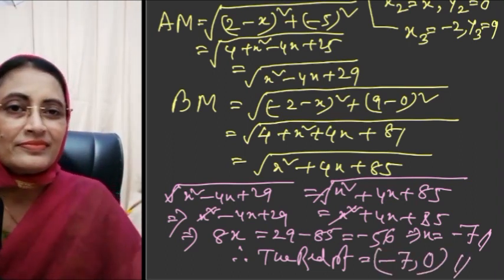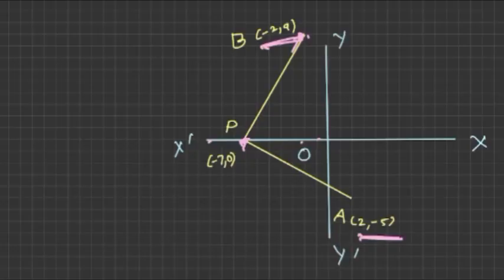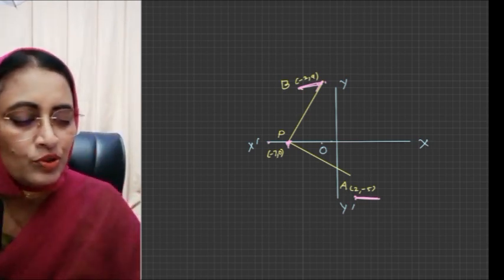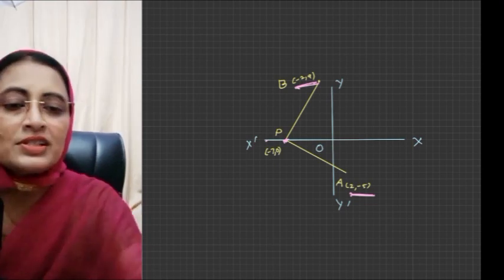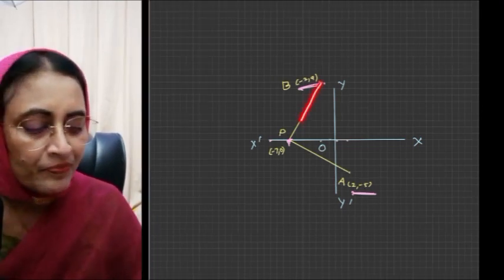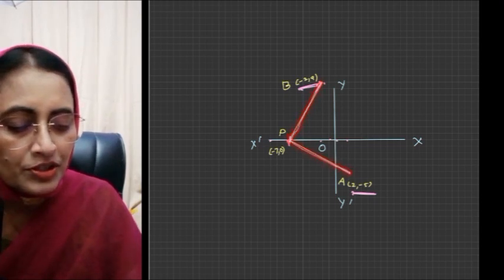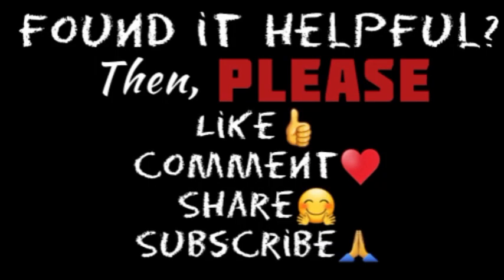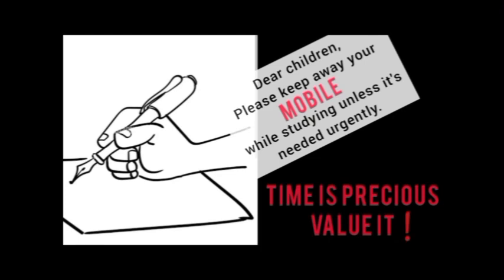Therefore the required point is (-7, 0). We can also verify graphically: plotting A(2,-5) and B(-2,9), and the point (-7,0) on the x-axis, after joining them the two distances are equal. You can verify with a scale. Hope you enjoyed the session. Thank you very much for watching. That's all for today. See you in my next video — till then take care and keep practicing.